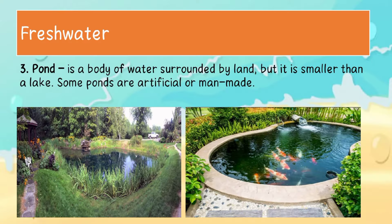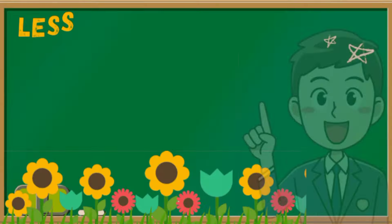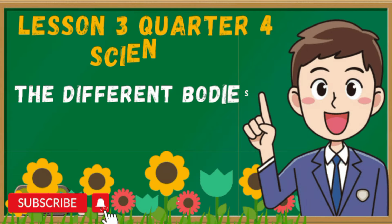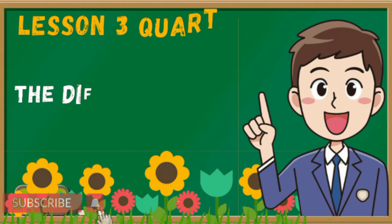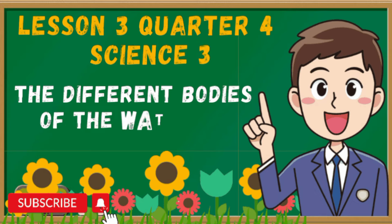A pond is a body of water surrounded by land, but it is smaller than a lake. Some ponds are artificial or man-made. Thank you everyone for watching this video. I hope you learned something — feel free to like, share, and subscribe for more educational content.